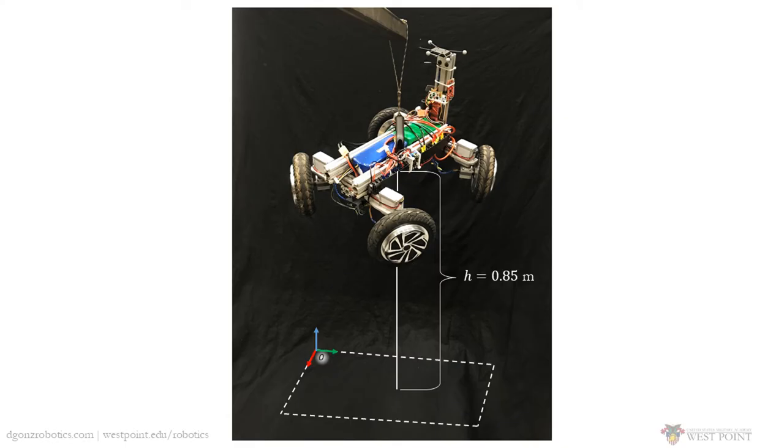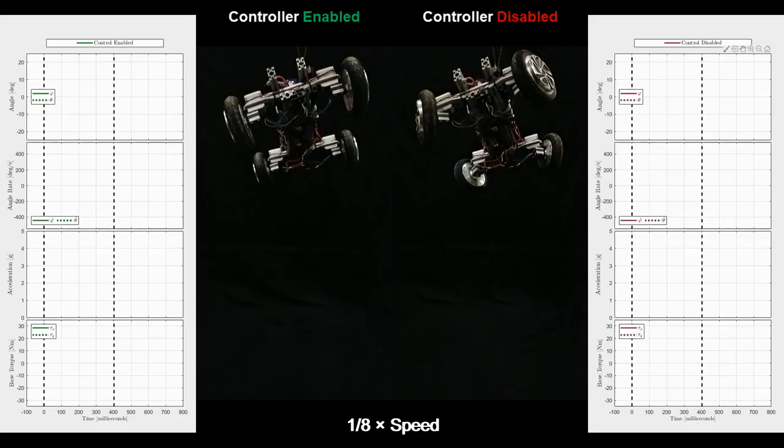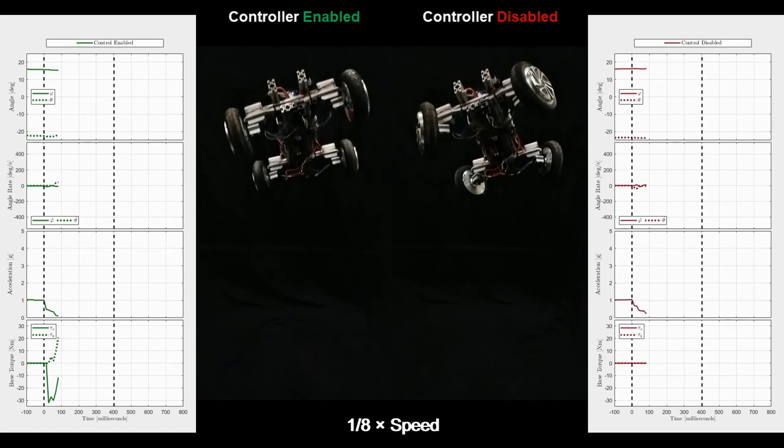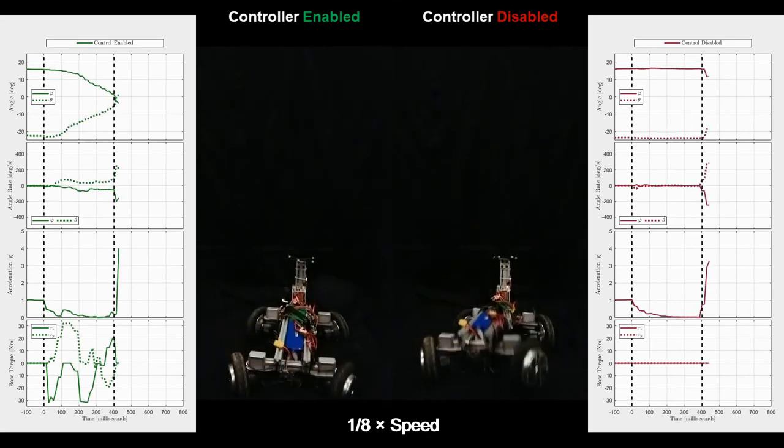To verify the implemented controller, we suspended it using a rigid beam and dropped it from a height of 0.85 meters. A roll and pitch initial condition could be adjusted using the tether. A comparison was made between a fall with the controller enabled and a fall with the controller disabled, each with the same initial conditions. We dropped it onto a cushion because the impact damping tires for the in-wheel hub motors have not yet been designed.